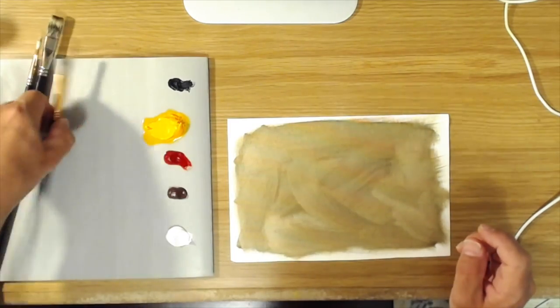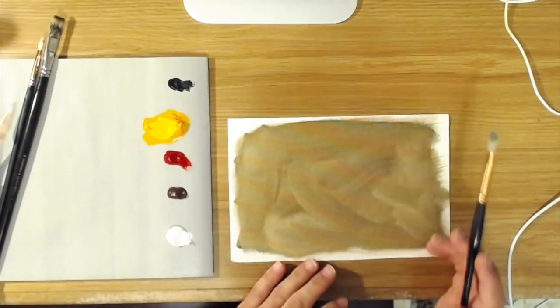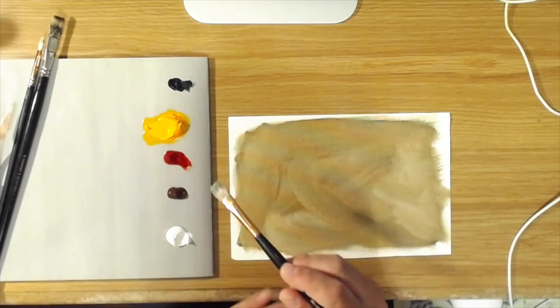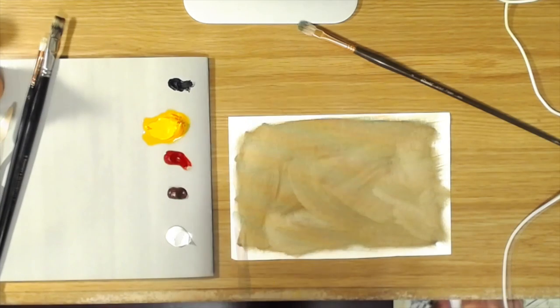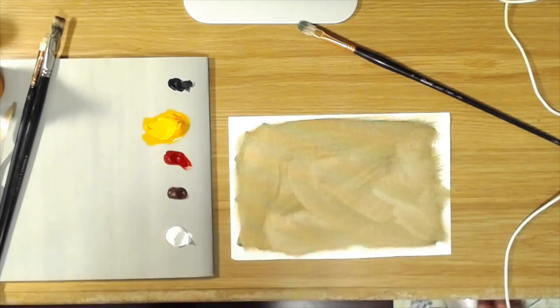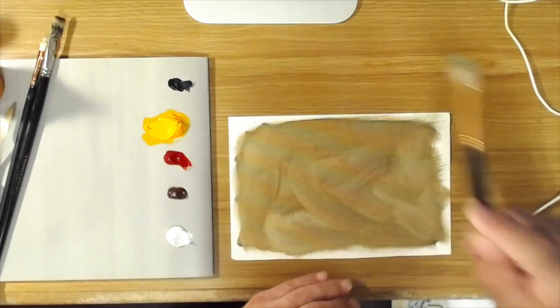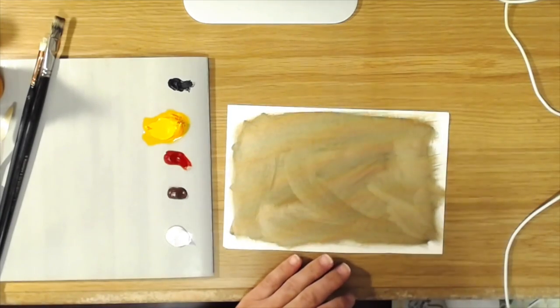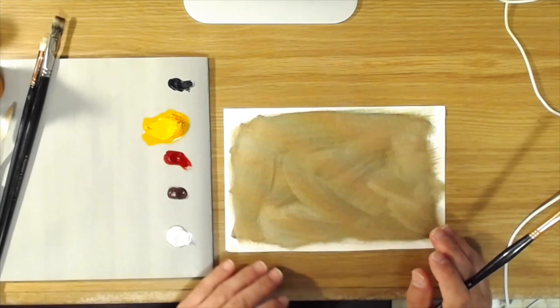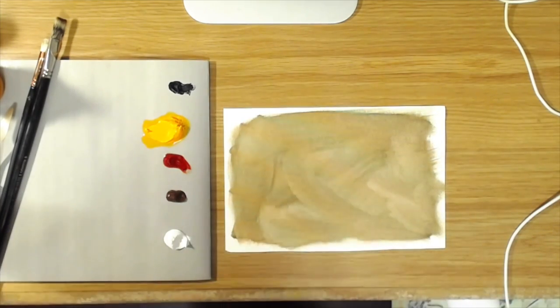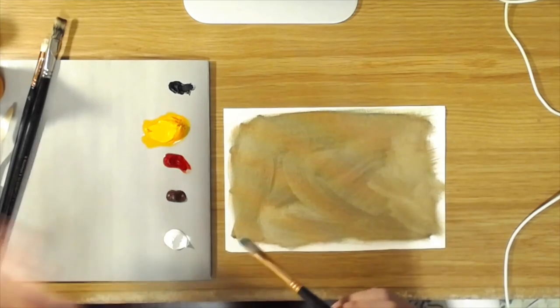The a la prima method, the traditional method for a la prima is the method that most of you will be familiar with where you start with transparent shadows and then you build up layers of opaque lights. So let's get started.